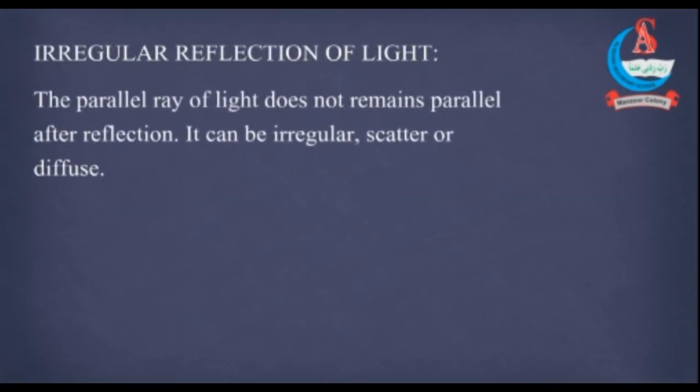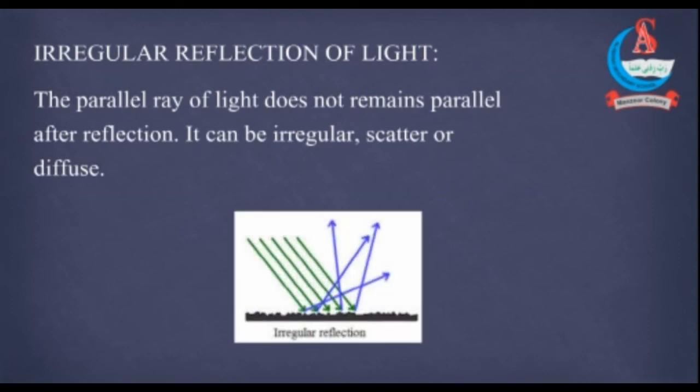It can be irregular, scattered or diffuse. Irregular reflection means ki light kisi rough surface ko hit kar rahi hai.